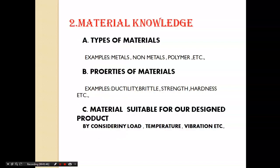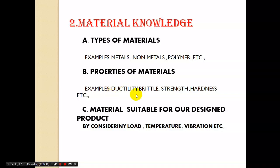The second factor is material knowledge. A design engineer must have material knowledge, because after designing a product he has the responsibility to specify the type of material suitable for the designed product. The engineer must know about types of materials such as metals, non-metals, and polymers, as well as material properties such as ductility, brittleness, strength, and hardness. Design engineers must apply the appropriate material for a component by considering various factors like load, temperature, and vibrations.